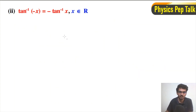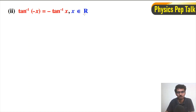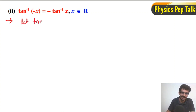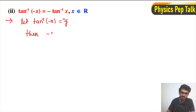Next, tan inverse of minus x is equal to minus tan inverse of x, for x belonging to the set of real numbers. Let us consider tan inverse of minus x is equal to y. Then we can write this as minus x is equal to tan of y.